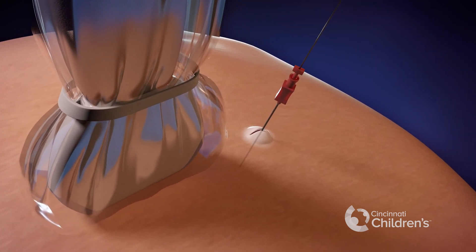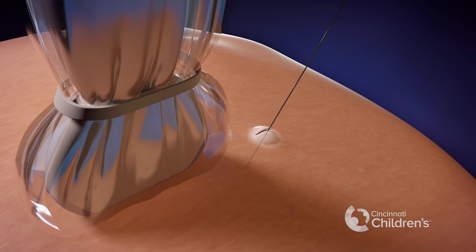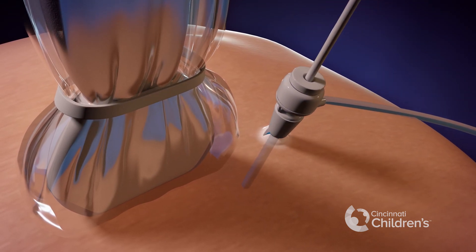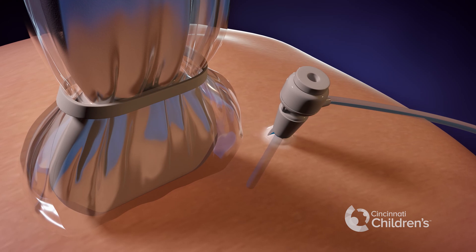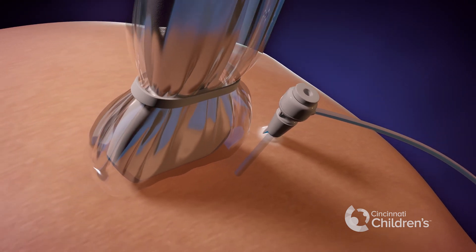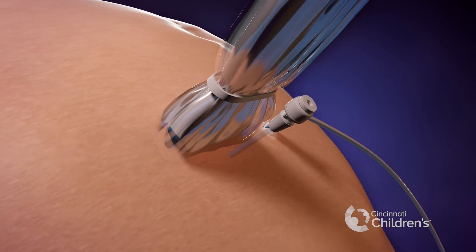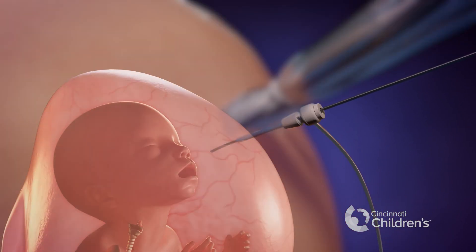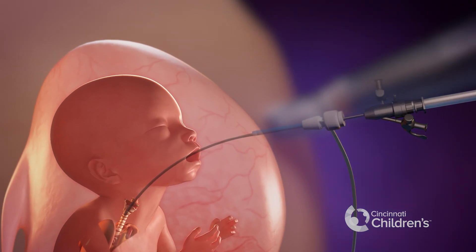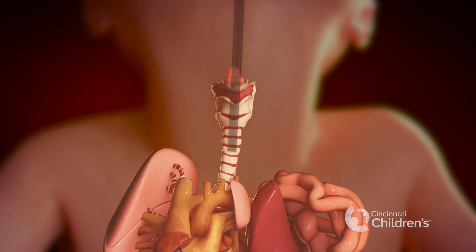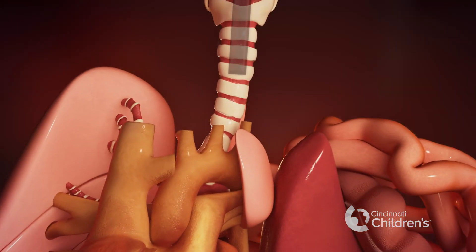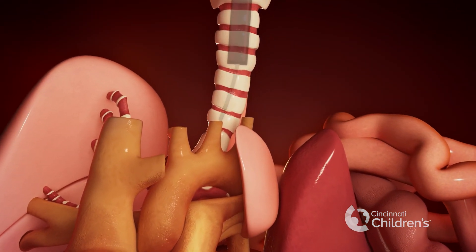This allows us to place a fetoscope, or a small camera, through the introducer into the amniotic space. Once we locate the baby's mouth, we advance the fetoscope carefully into the fetal trachea, or the windpipe, ensuring the scope is in good position. The ideal position is in the main trachea below the vocal cords but above the carina, before the trachea splits into the two main bronchi.